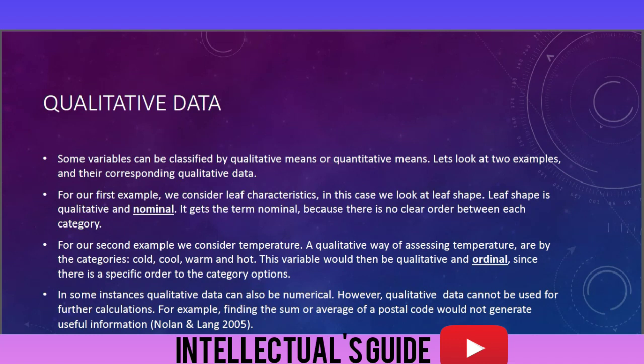In some instances, qualitative data can also be numerical. However, qualitative data cannot be used for further calculations. For example, finding the sum or average of a postal code would not generate useful information.